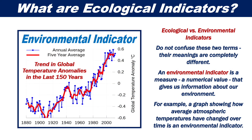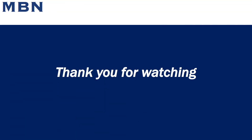Ecological versus environmental indicators — do not confuse these two terms, their meanings are completely different. An environmental indicator is a measure, a numerical value, that gives us information about our environment. For example, a graph showing how average atmospheric temperatures have changed over time is an environmental indicator. Thank you for watching this brief video on ecological indicators.